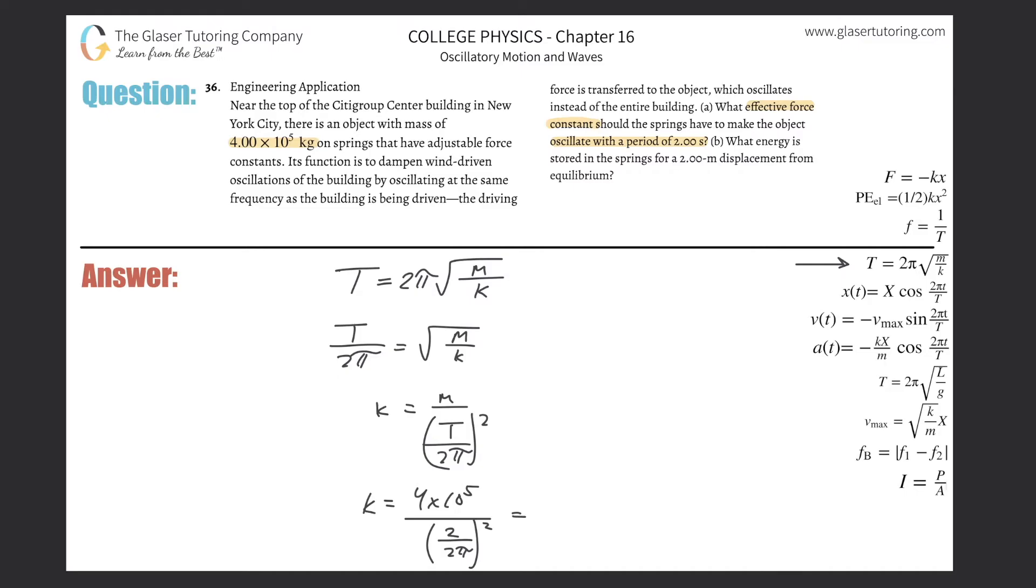So what do we get? We get a spring constant of about 3.95 times 10 to the 6, and that is going to be in terms of newtons per meter. So that takes care of that. And now letter B is going to be, let's see, letter B.